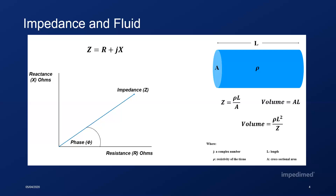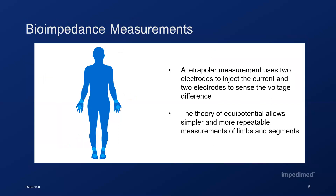So how do we take bioimpedance measurements? A tetrapolar measurement uses four electrodes to measure the impedance, minimizing errors introduced from contact impedance by separating the drive and sensing electrodes. Electrodes can be gel-based or plate electrodes and are the interface between the body and the bioimpedance device. To measure the whole body, we drive the current on the hand and foot and sense the voltage or impedance between separate sensing electrodes on the wrist and ankle. The current flows between the hand and foot in black, and the voltage is sensed between the wrist and ankle in green. The part where the green and black overlap is what is measured — so between the wrist and the ankle.